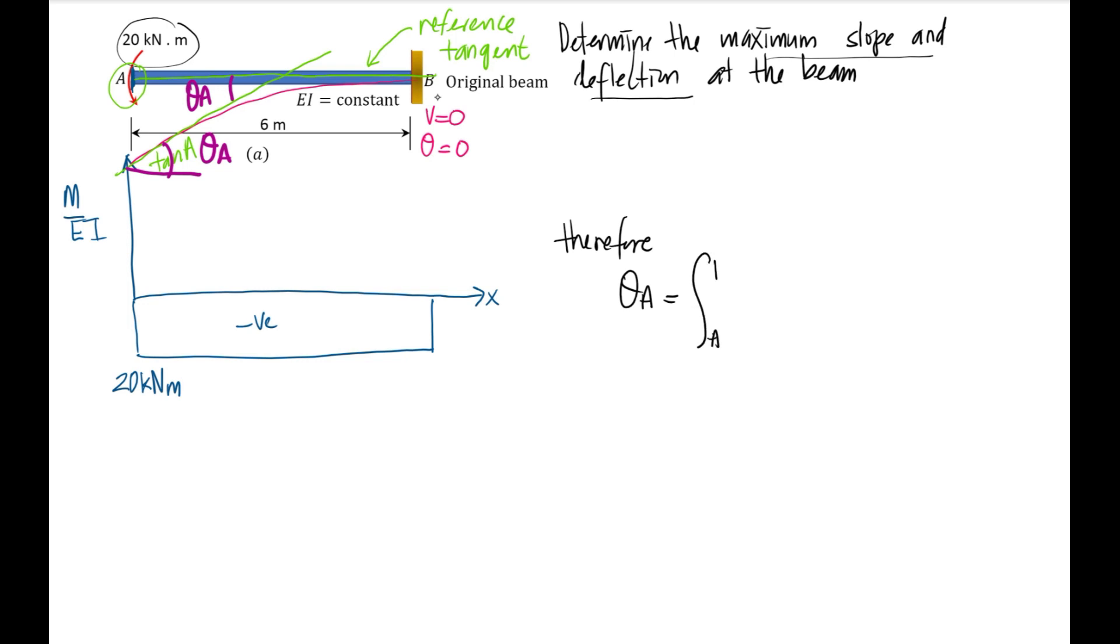Therefore, you have 20 times 6 meters over EI. So therefore, you will get negative 120 over EI, since the moment is negative. This is the value of θ_A.